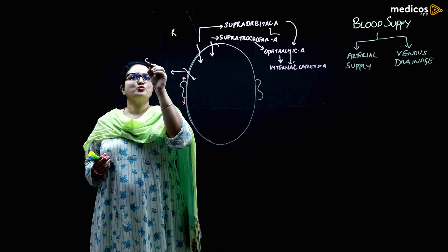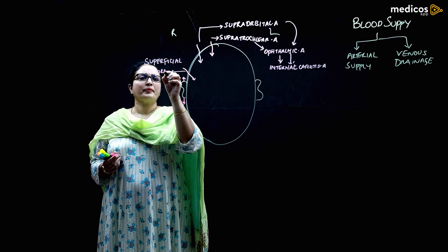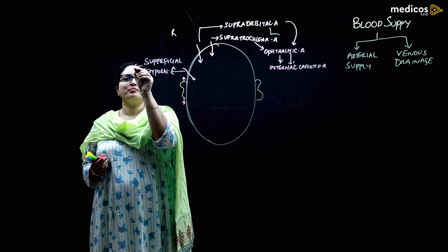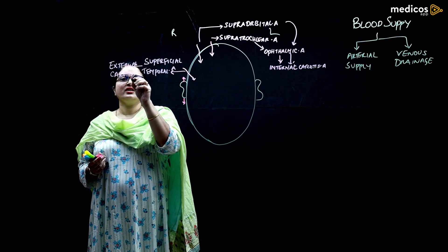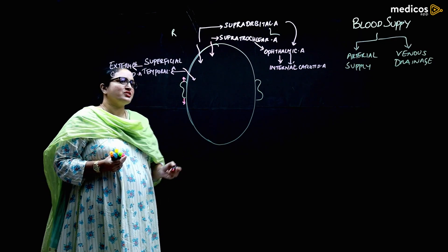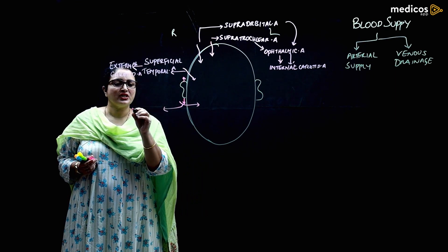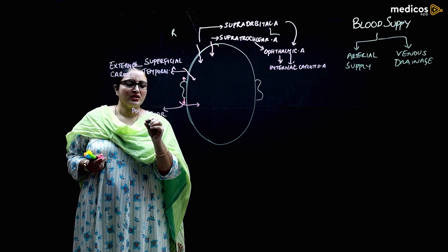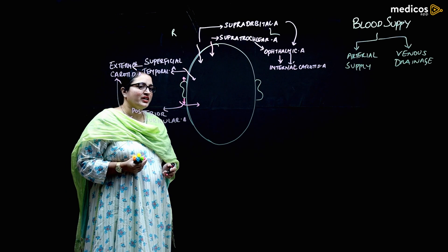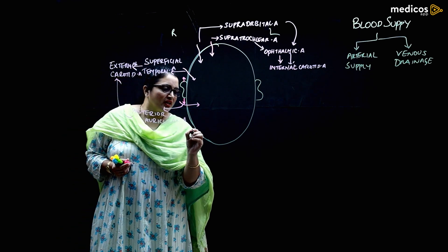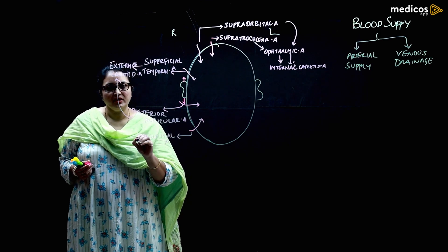The superficial temporal artery is a branch of the external carotid artery. Behind the auricle, you have the posterior auricular artery, which is also a branch of the external carotid artery. Further behind, there is the occipital artery, also a branch of the external carotid artery.